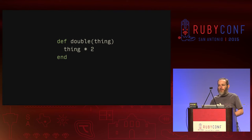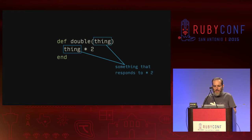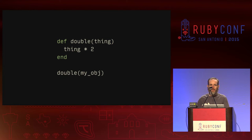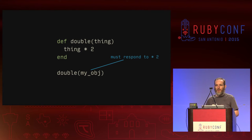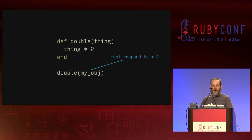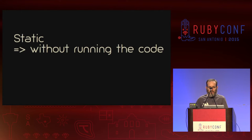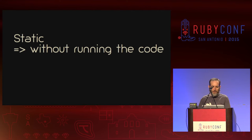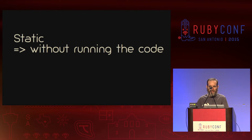But there are some things we can work out. Just by looking at the code, we can say that this thing, whatever it is, has to respond to times two. If we call this method passing in some object, that object also has to respond to times two, and if it doesn't, our code is going to explode with a runtime error. The important thing here is that when I say static typing, static means we can work stuff out without having to run the code — and this is a huge idea for Ruby, a big philosophical shift in how we think about correctness.